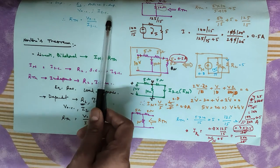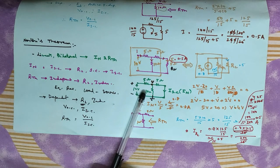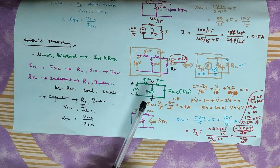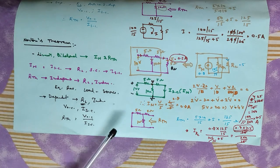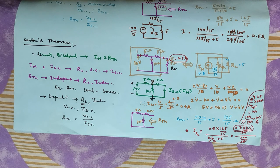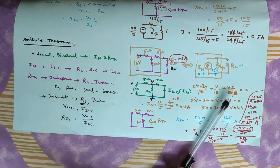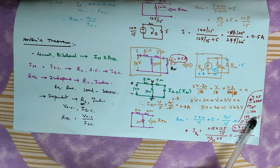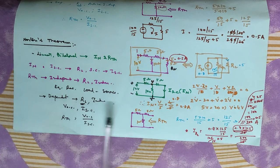If you want to verify using Thevenin's theorem, you would do the same circuit analysis. This is just for comparison — that is the beauty of the theorem. Both methods give the same result: 0.5 A. And we have confirmed 0.5 A, which demonstrates the consistency of the two theorems.